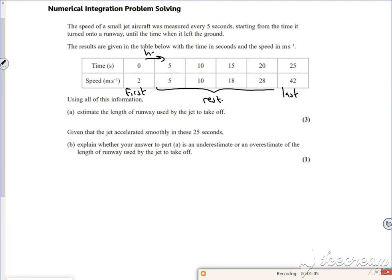So I'll use the trapezium rule, so it's going to be five over two, first plus last plus two times the rest.